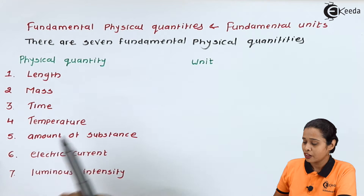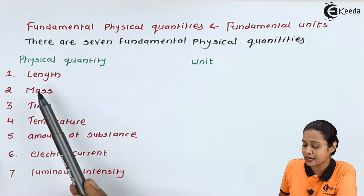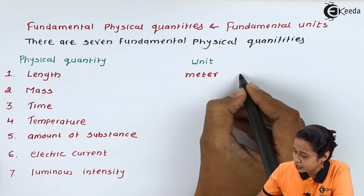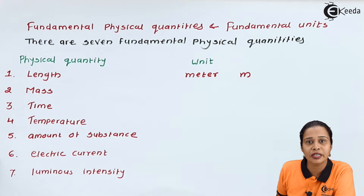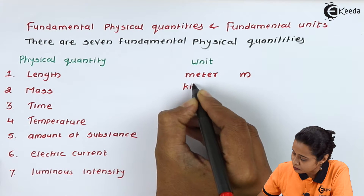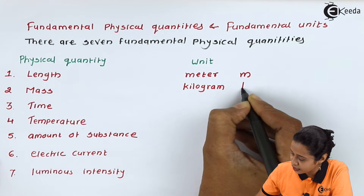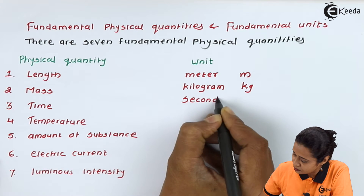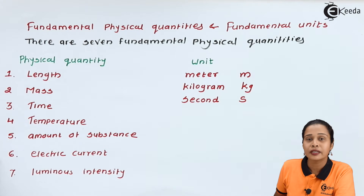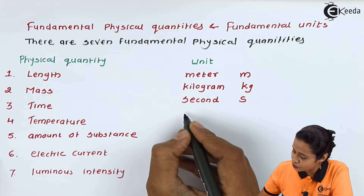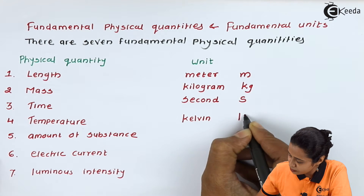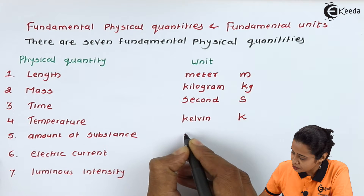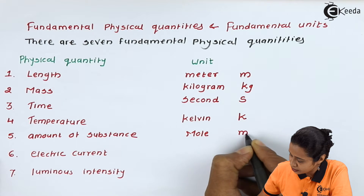Let's see what these quantities are. The first fundamental physical quantity is length, and its unit is meter, written as m. The second is mass, and its unit is kilogram, written as kg. Then we have time, and the unit of time is seconds, written as s. Then the fourth fundamental quantity is temperature, and its unit is Kelvin, denoted by capital K. The fifth fundamental quantity is amount of substance, and its unit is mol.